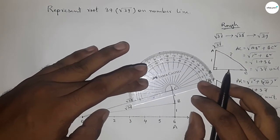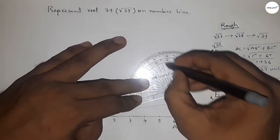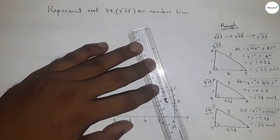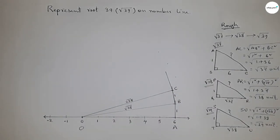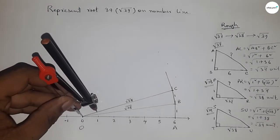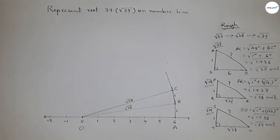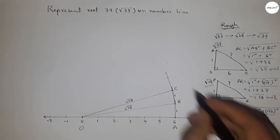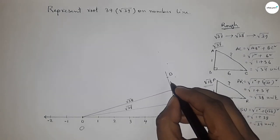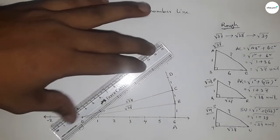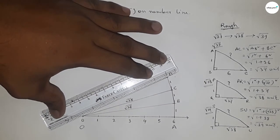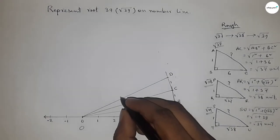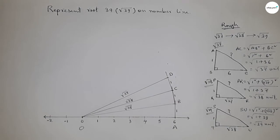Draw a perpendicular line or 90-degree angle on point C using a protractor. Take one unit length by compass and mark point D. Join O and D — this length OD is root 39 units.